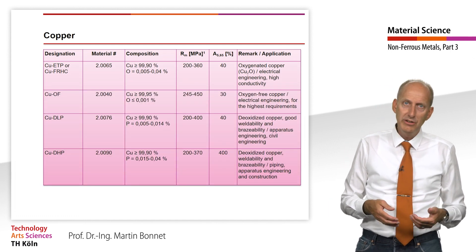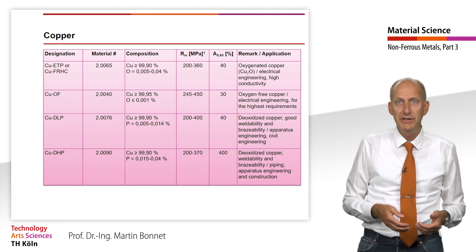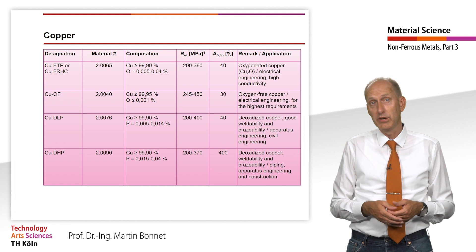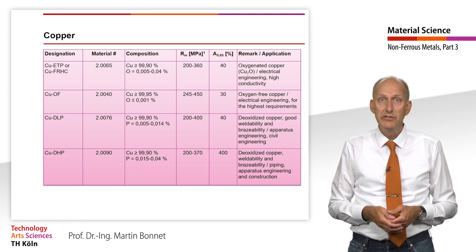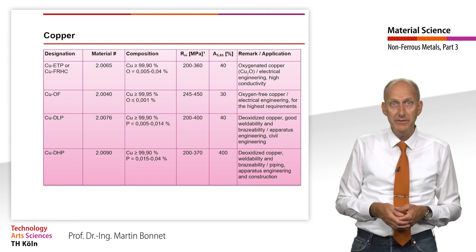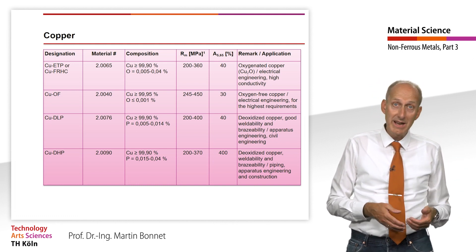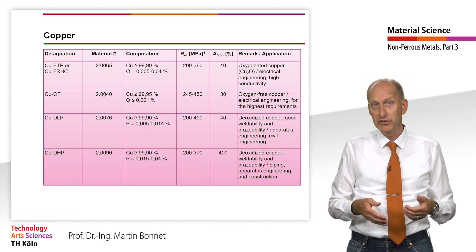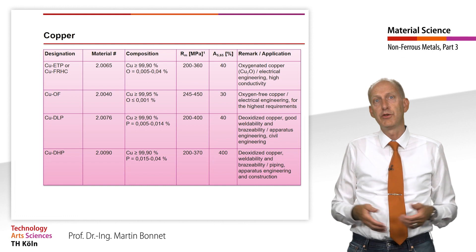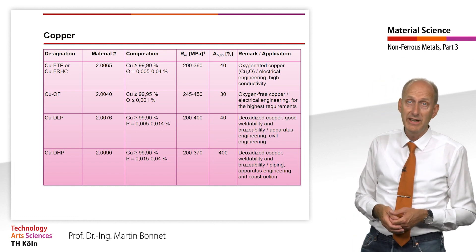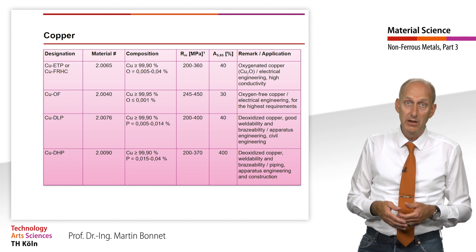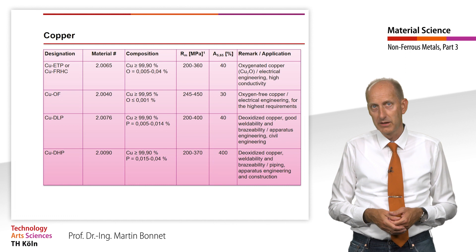If oxygen-free copper is needed for processing but the highest conductivity is also desired, this can only be achieved through extreme efforts during production. These highest qualities are called CuOF for oxygen-free copper. If weldability is more important and some losses in conductivity can be accepted, small amounts of phosphorus are added as a deoxidizer. This binds off any oxygen so well that it is not available for the formation of copper oxide. These grades are designated CuDLP or CuDHP for phosphorus-deoxidized copper — low residual phosphorus and high residual phosphorus, respectively.